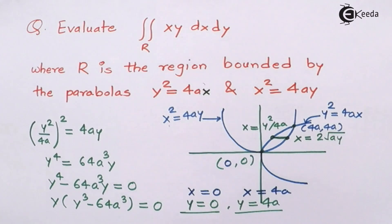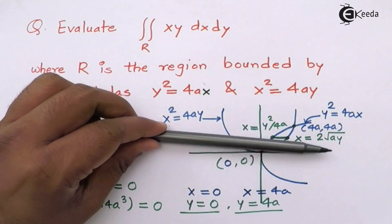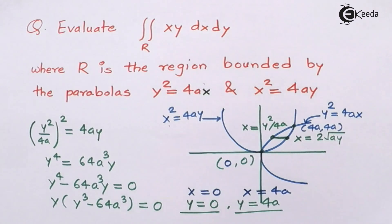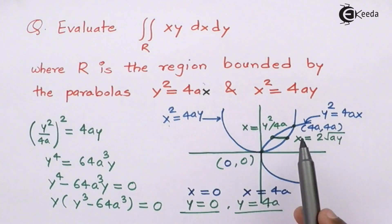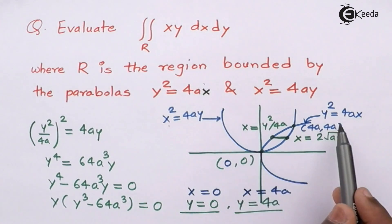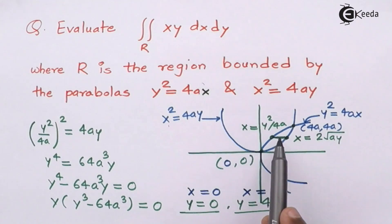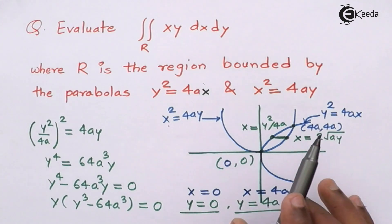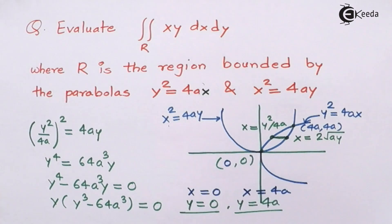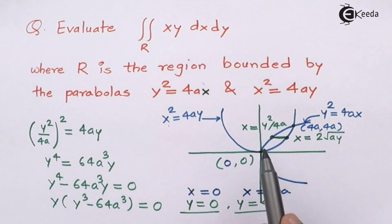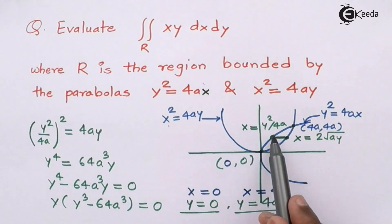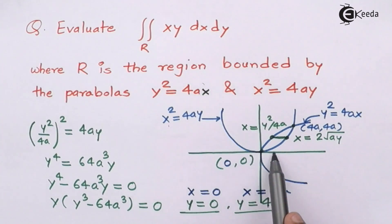The strip moves vertically from y = 0 to y = 4a. For x limits, since the strip is horizontal, we go from left to right — from the lesser value to the higher value.